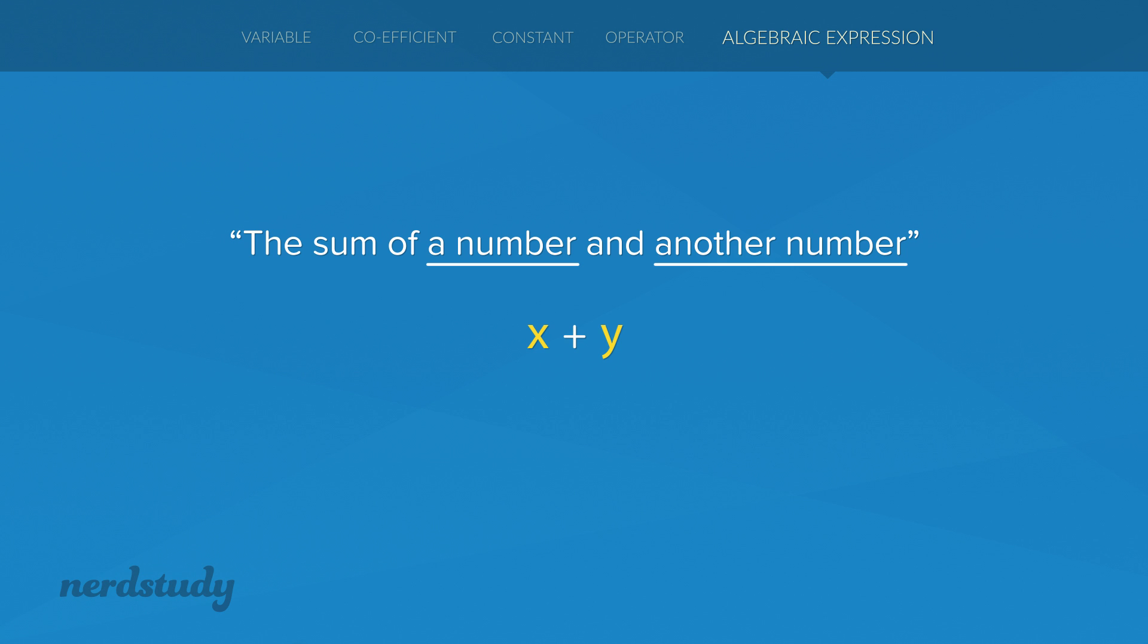So again, notice here that we have two different variables. This means that the values of these two variables could potentially be different or they could also just be the same. This is a very different situation from our next example.